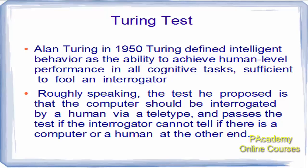Roughly speaking, the test Turing proposed is that the computer should be interrogated by a human via a teletype and passes the test if the interrogator cannot tell whether there is a computer or a human at the other end. If the AI system passes, the interrogator should not be able to distinguish whether the answer was given by a computer or a human. That was the Turing test, which defined the benchmark for capabilities of an AI system.